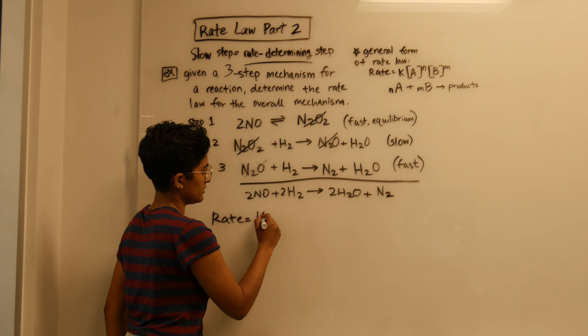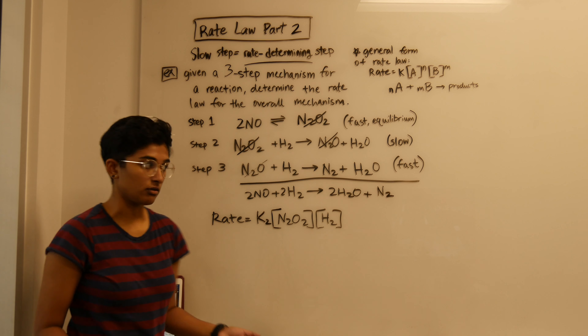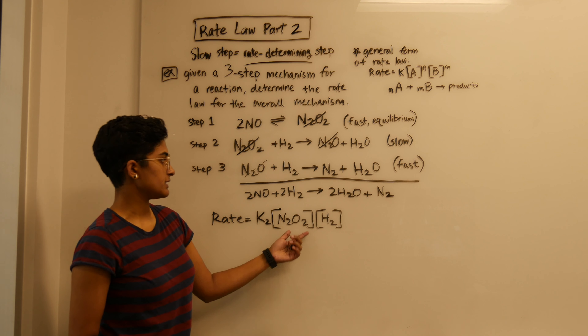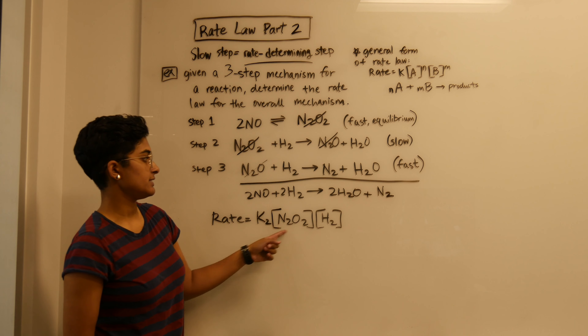Normally we would write our rate based on the slow step — I'm going to call this K2 because it's the K from the second step — so this would be N2O2 times H2. But the issue is that we have an intermediate in what's supposed to be our overall rate law. This can't happen because the intermediate does not exist in our overall mechanism.